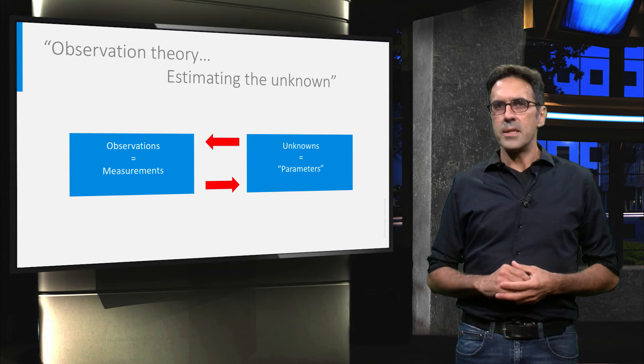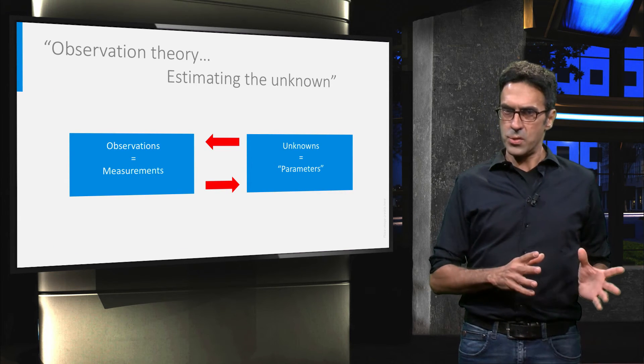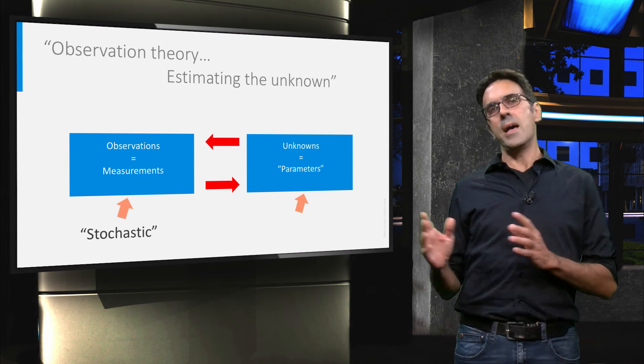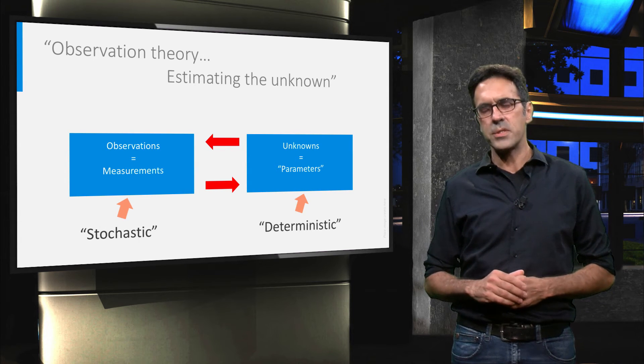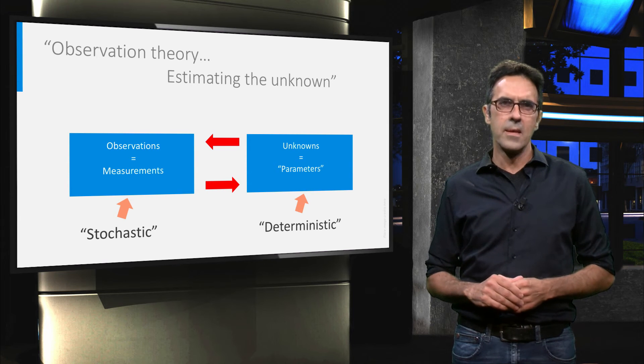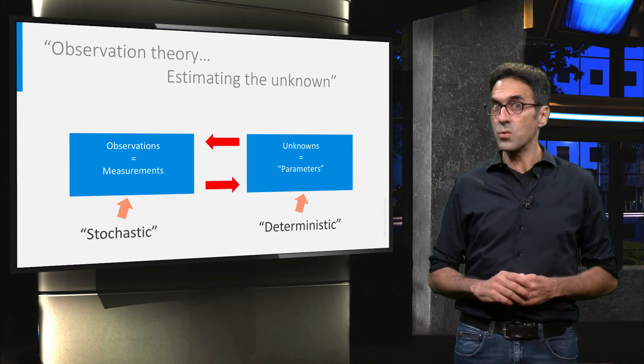To summarize, in an estimation problem we have unknowns, or parameters, which are deterministic, and observations, or measurements, which are stochastic. The difference between these two will become very important in this course.